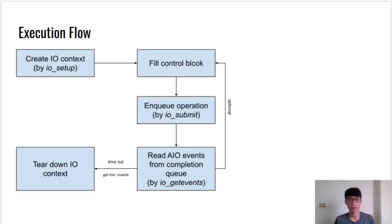Like POSIX AIO, the execution flow of an application using libaio is similar. In the first step, the user needs to create an asynchronous I/O context and set the proper depth of the queue. Then the user can fill the detailed information of the I/O request into the I/O control block — what is the type of operation, target file descriptor, file offset, location of buffer, and length to be transferred. After filling data into the control block, the user can submit the batched operations in one shot. After submission, the user needs to wait for completion. The user can decide the minimum number of completed events to wait for. When the number of completed events reaches the minimum or the timeout expires via io_getevents, it returns. After return, the user can submit another new I/O request, or tear down the I/O context and leave the asynchronous call section.